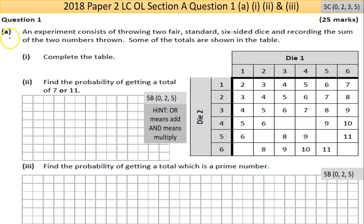So question 1 here is a probability question. Part A has three different parts with different marks. An experiment consists of throwing two fair standard six-sided dice and recording the sum of the two numbers thrown. Some of the totals are shown in the table below. So you have the first throw, the dice could be one and one snake eyes. When you add them together you get two. You could get one and two where the sum is three.